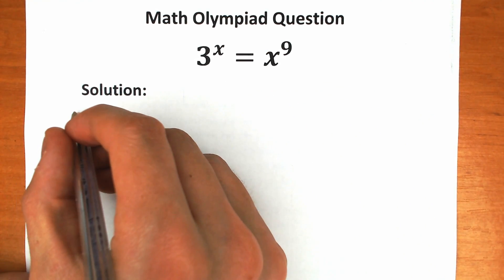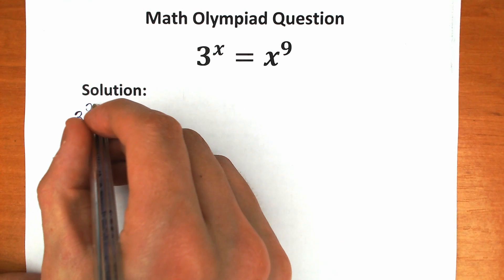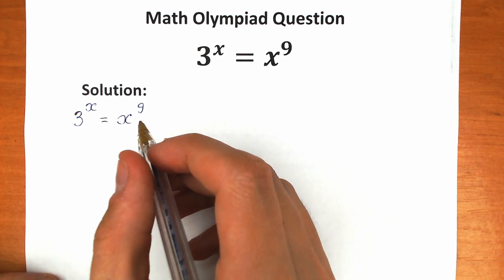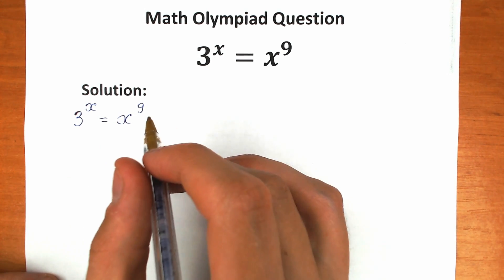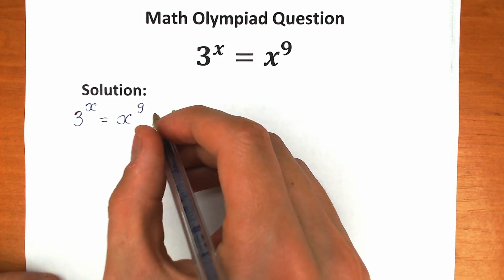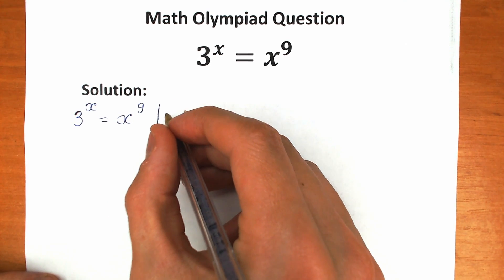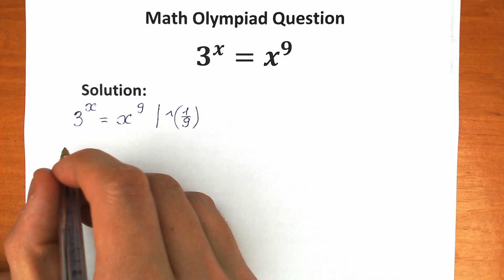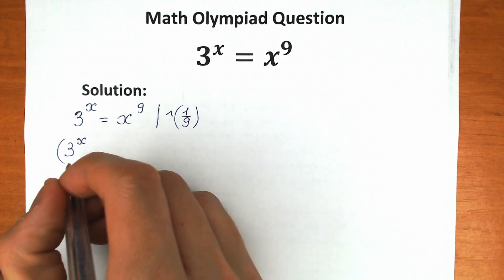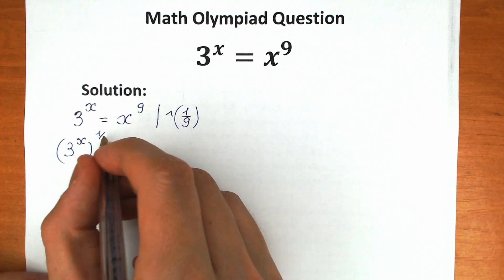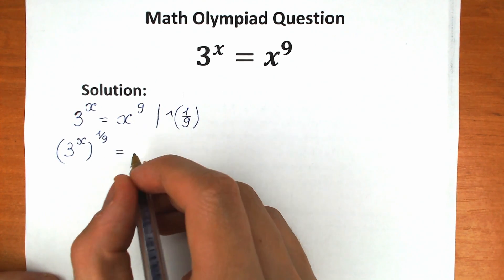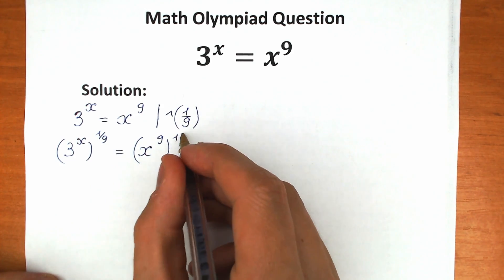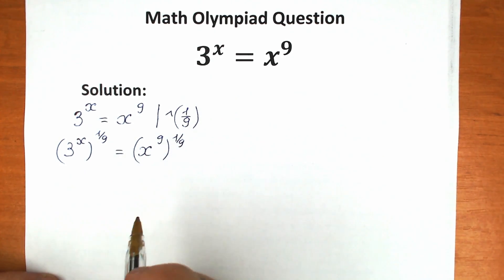So first of all, let's rewrite this challenge: we have 3 to the power x equal to x to the power 9. First of all, let's raise both sides to the power 1 over 9. In a few minutes you will see why I do this. So we raise both sides to the power 1 over 9.